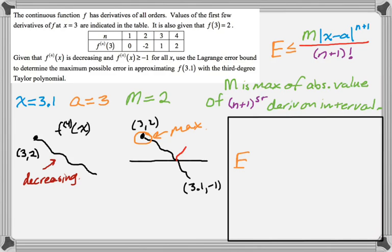So now we just kind of fill in the formula. So the maximum error is less than or equal to 2 times 3.1 minus 3 to the 4th over 4 factorial. And usually you don't even really simplify that. I mean, I guess if you had a calculator, you would. So that's just a sample problem. I hope you found it helpful, and good luck.